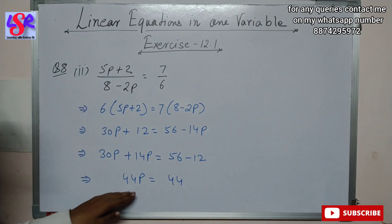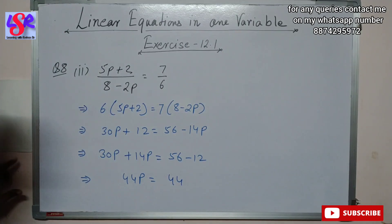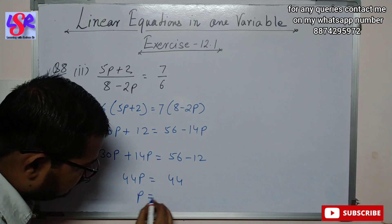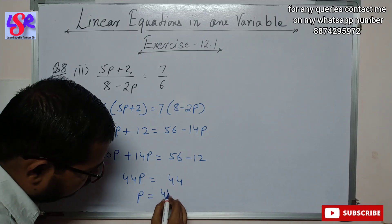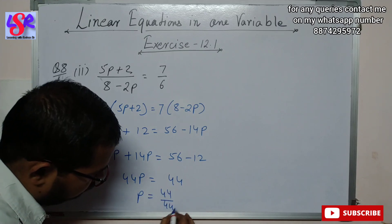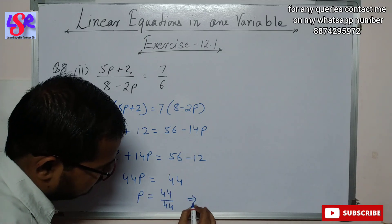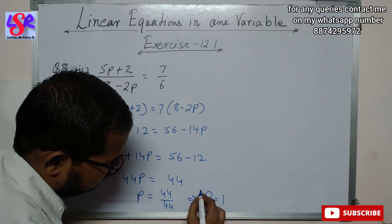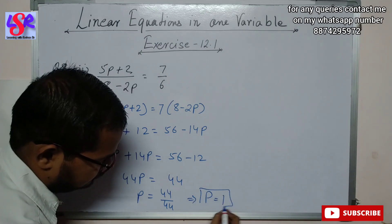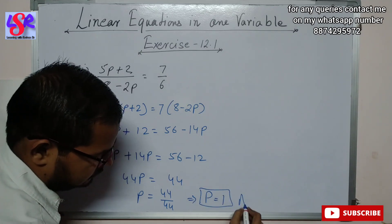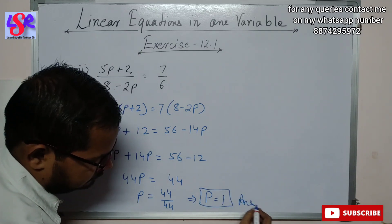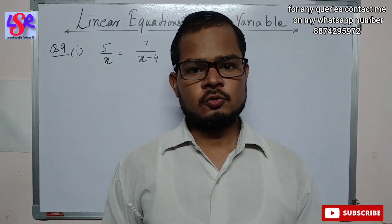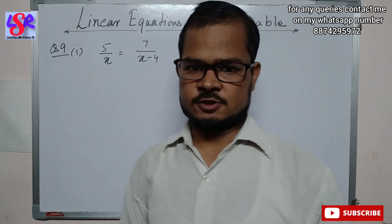Transposing 44, we get p = 44/44 = 1 as the answer. Now let us move to question number 9, first part.